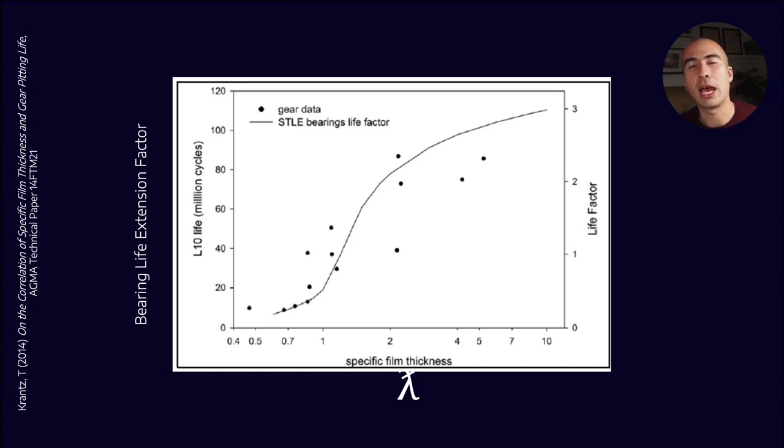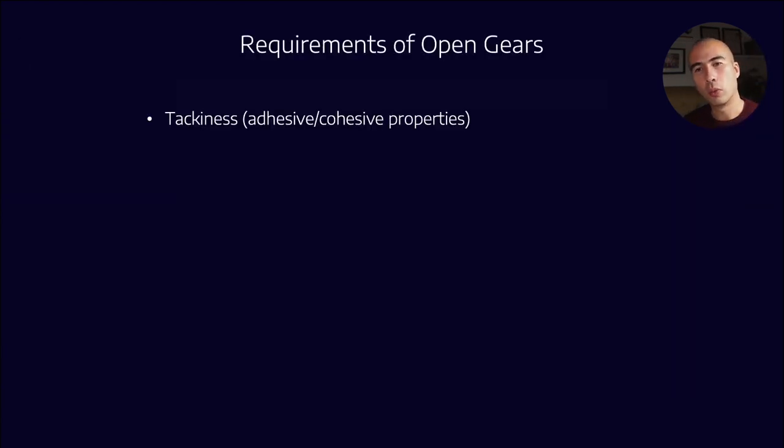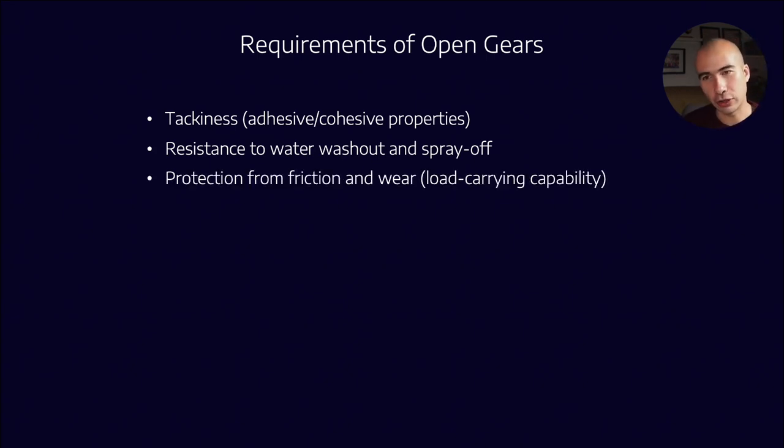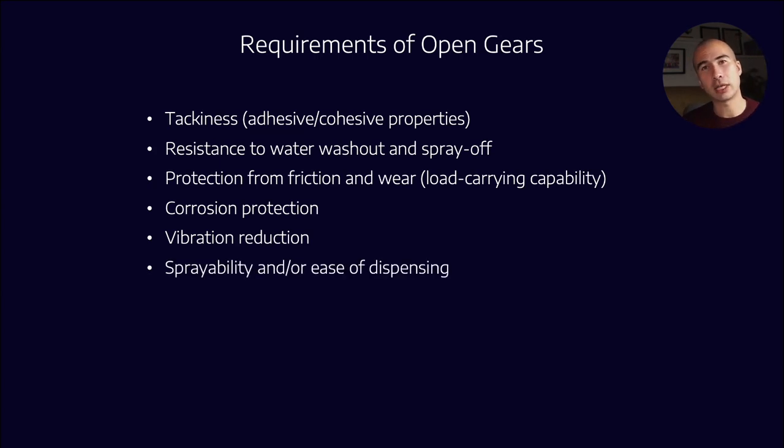So what are the requirements that we have of open gear lubricants? Well, one thing, we want tackiness. So we want them to adhere to the actual surface. We'll get into that a little bit more in future modules. We want it to be resistant to water washout and spray off. So again, because they're not in an enclosure, that means that often they might be subject to water spray and things like that. And we don't want the lubricant leaving the gear tooth and losing its protection. We want it to protect from friction and wear. So we want it to have that load carrying capability. We want it to protect against corrosion, reduce vibrations.